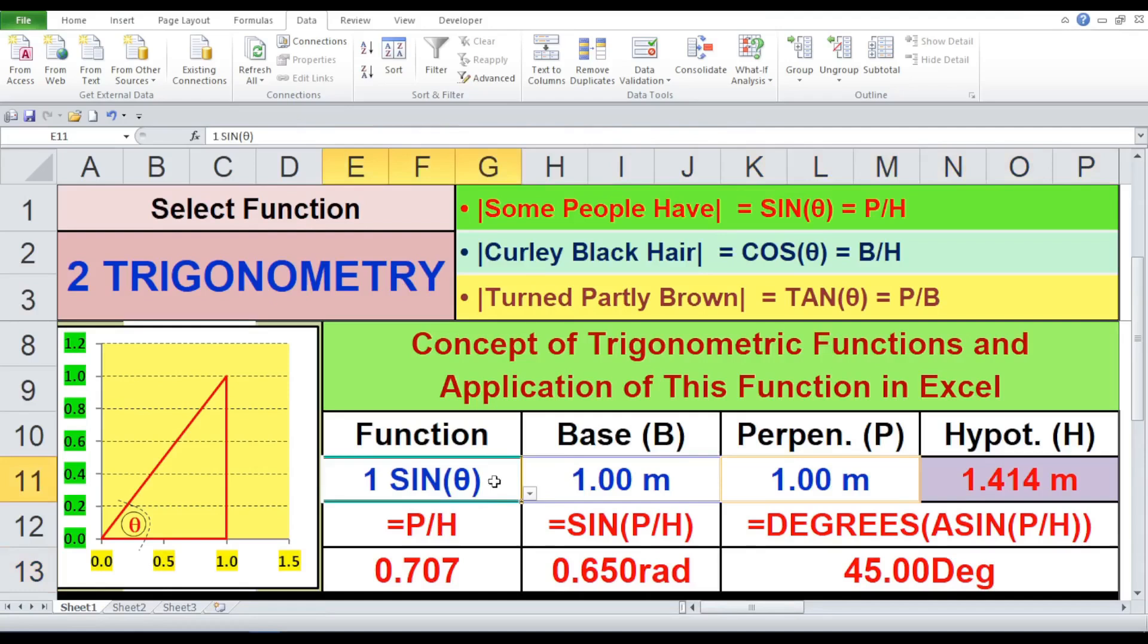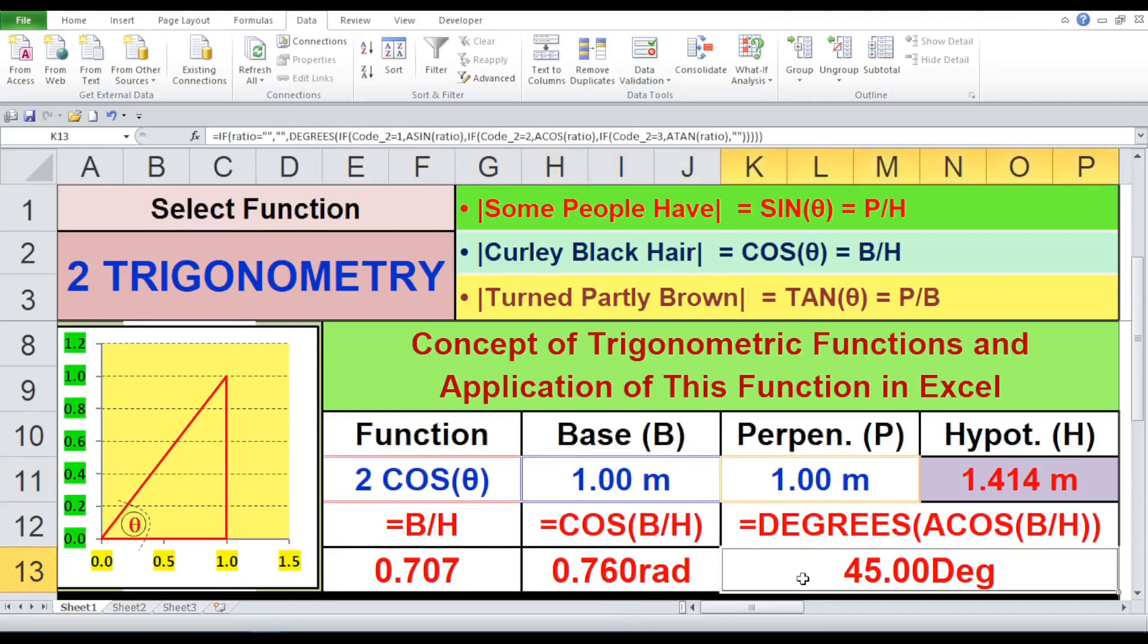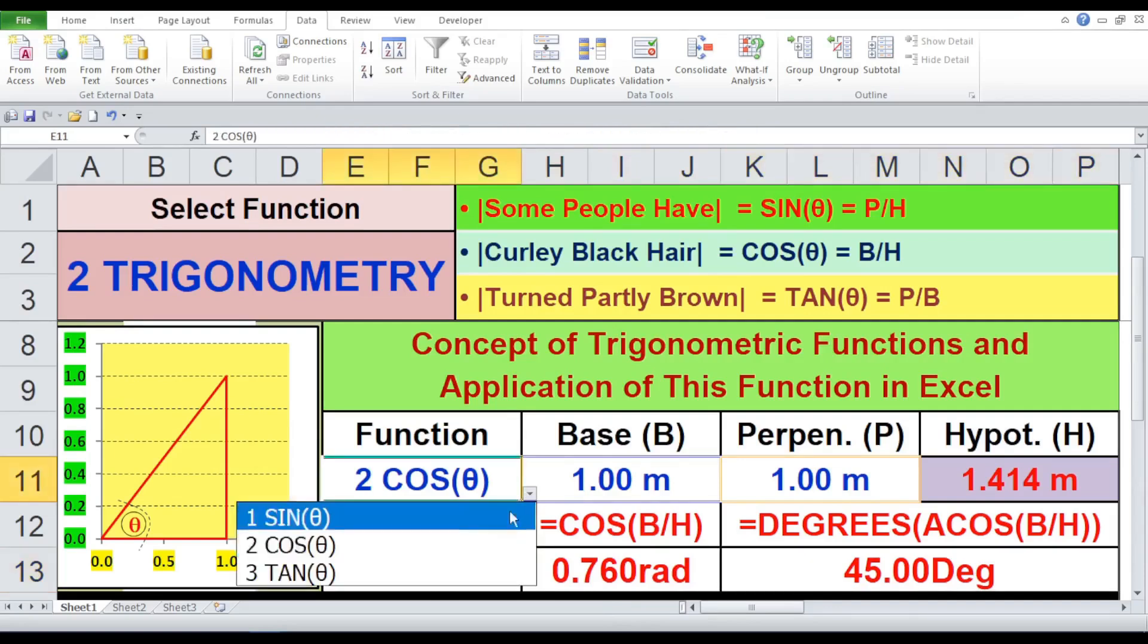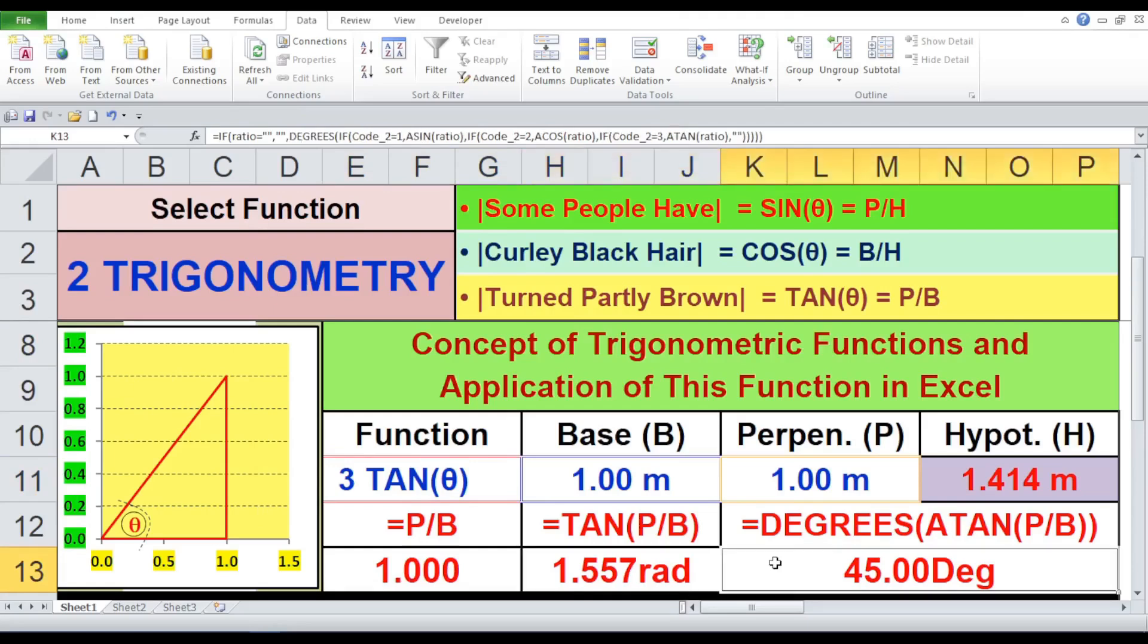Trial 1B, function cos. Cos B by H equals 0.760 radians. Base angle theta equals 45.00 degrees. Trial 1C, function tan. P by B equals 1.000. Tan P by B equals 1.557 radians. Base angle theta equals 45 degrees. Since the base angle theta is the same, it proves our calculation is perfectly alright.